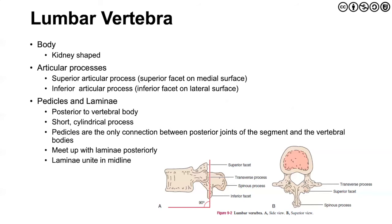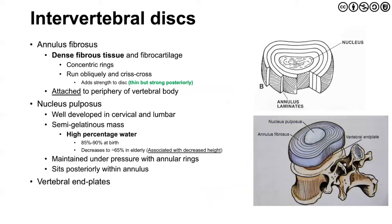The intervertebral discs are made up of outer rings of the annulus — annular fibers that are very dense. They exist in concentric rings but run obliquely and crisscross, adding strength to the disc. These fibers are attached to the periphery of the vertebral body. At the inner portion we find the nucleus pulposus — a semi-gelatinous mass with a very high water percentage. As we get older, we see that decrease in height because we start to desiccate, losing some of that water percentage. Remember, the disc contributes 20% to 25% to the total height of the vertebral column.